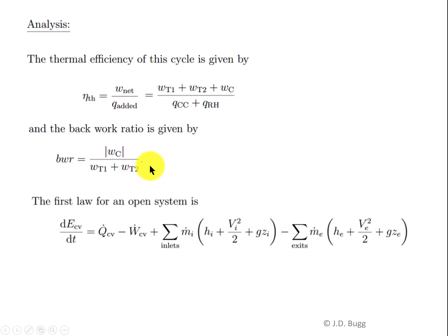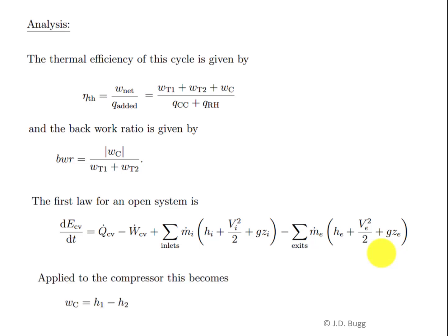We apply the steady-state first law for an open system to each component. For the compressor, with adiabatic operation and negligible kinetic and potential energy, the work per unit mass is H1 minus H2. The inlet enthalpy H1 is straightforward since we know T1 = 300 K, and for an ideal gas enthalpy is a function of temperature only. From table A22, H1 = 300.19 kJ/kg.